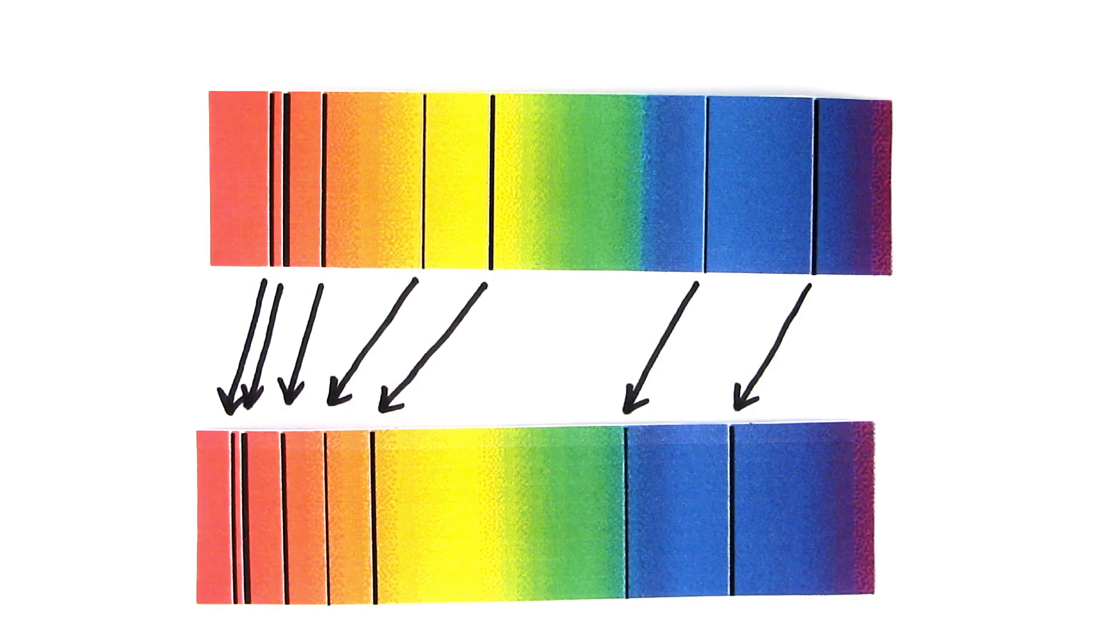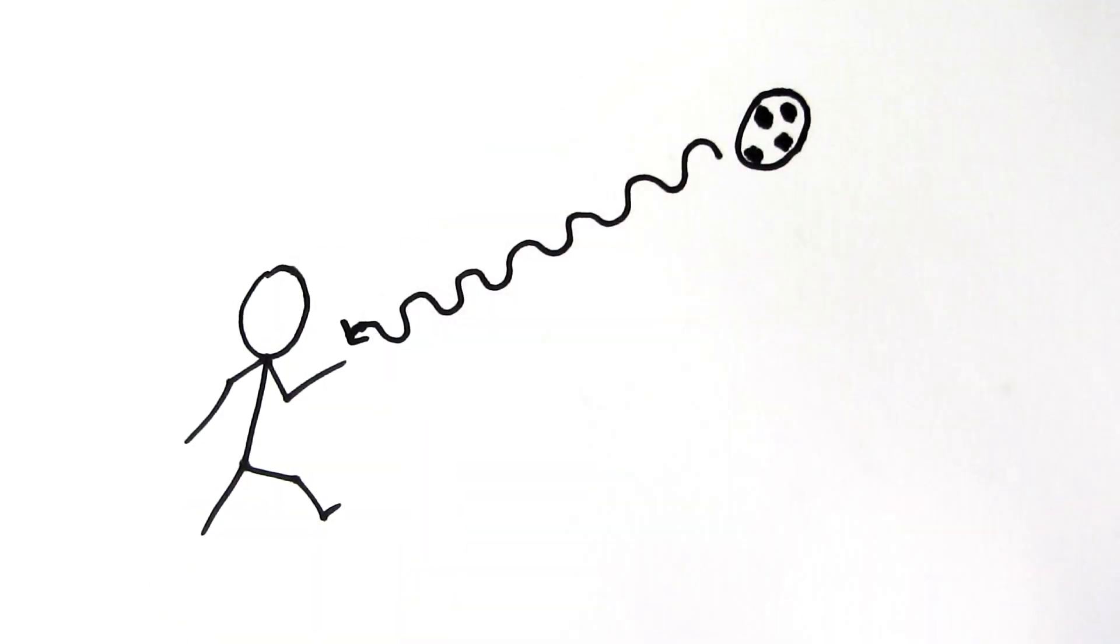This is how we know it's moving away from us. But be careful, just because things moving away from us are shifted towards the red end of the spectrum, doesn't mean they necessarily look red.